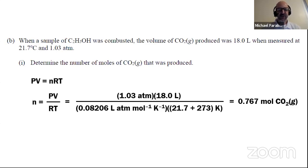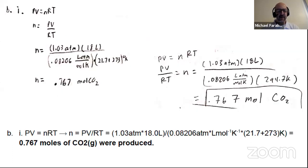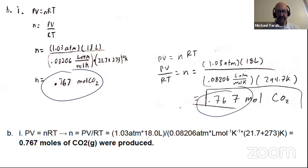I'm going to go ahead and rearrange the ideal gas law: N equals PV over RT. Plug in the information given in the problem along with the ideal gas constant and the conversion from Celsius to Kelvin. I'm looking for an answer for moles of carbon dioxide of approximately 0.767. Here's a student response — they set up their work. I can see everything, including the temperature change from Celsius to Kelvin, getting 0.767. Again, same thing here — 0.767 moles. This one typed their answer, and everything looks correct in terms of the setup.